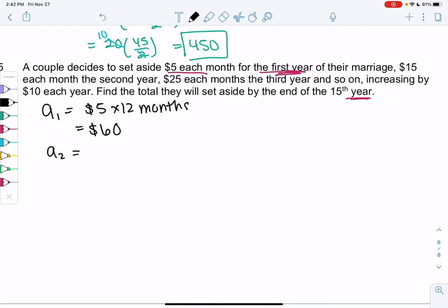A2 will be $15 times the 12 months. And that would be $180. A3 would be 25 times 12 months or $300.